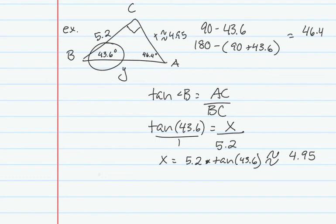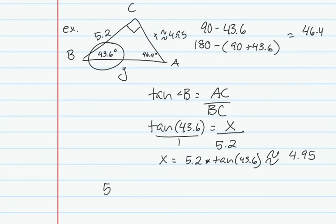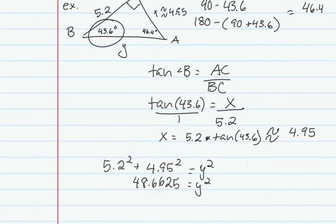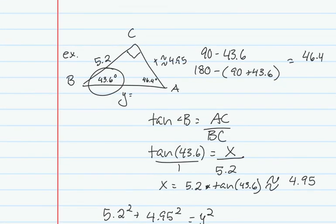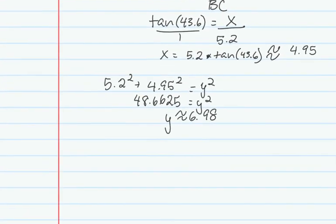To find the hypotenuse, I use the Pythagorean theorem: 5.2 squared plus 4.95 squared equals Y squared. Typing that in gives 48.6625 equals Y squared, and taking the square root gives Y approximately equal to 6.98. I've now solved for all sides and all angles of the triangle.